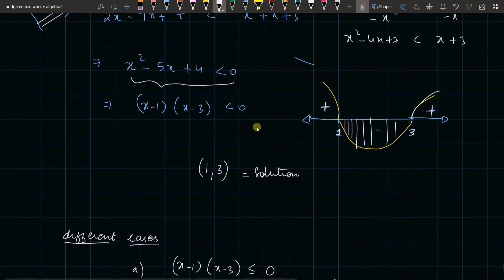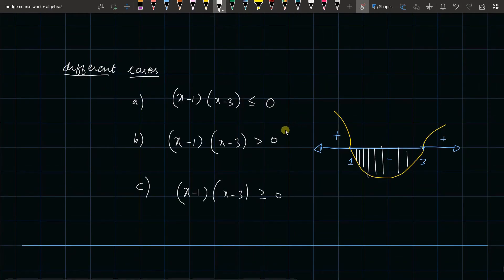So the solution is where it is less than 0, so that is 1 to 3. So our solution is going to be 1 to 3. Now these are different cases: (x - 1) and (x - 3).